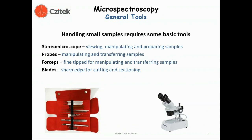Indispensable tools in preparing samples include a stereo microscope, fine-tip probes for moving and manipulating smaller samples, and blades — some sharper than others for cutting and sectioning. This simple kit provides most, if not all, of the tools needed for basic, practical infrared microspectroscopy sample preparation.